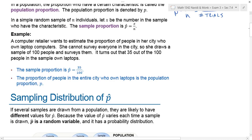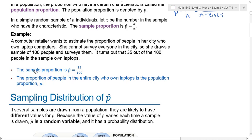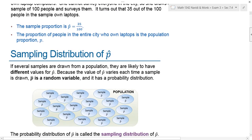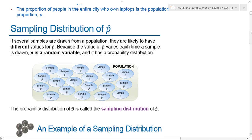For example, a computer retailer wanted to estimate the proportion of people in her city who owned laptop computers. She can't survey everyone in the city, so she draws a sample of 100 people and surveys them. It turns out that 35 out of 100 people own laptops, so the sample proportion is 35 over 100, or 0.35. The proportion of people in the entire city who own laptops is the population proportion, which we estimate by averaging proportions from multiple samples.